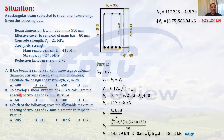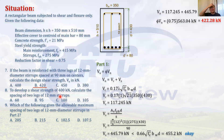Part two: to develop a shear strength of 400 kN, calculate the spacing of two legs of 12 mm stirrups. What is meant by that? For the beam's design strength to be 400 kN, that 400 kN is your Vu.